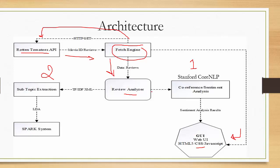Those reviews are passed to the review analyzer, which processes them through two pipelines. The first is Stanford CoreNLP, performing co-reference and sentiment analysis. The results are displayed in the GUI with a specific score and keyword. Scores from Stanford NLP range from 0 to 5, where 5 is the most positive and 0 is the most negative review for a specific co-reference topic.